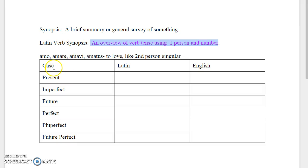Well you can see here that in the synopsis we cover all six tenses: present, imperfect, future, perfect, pluperfect, and future perfect. We cover each one of those different ones.